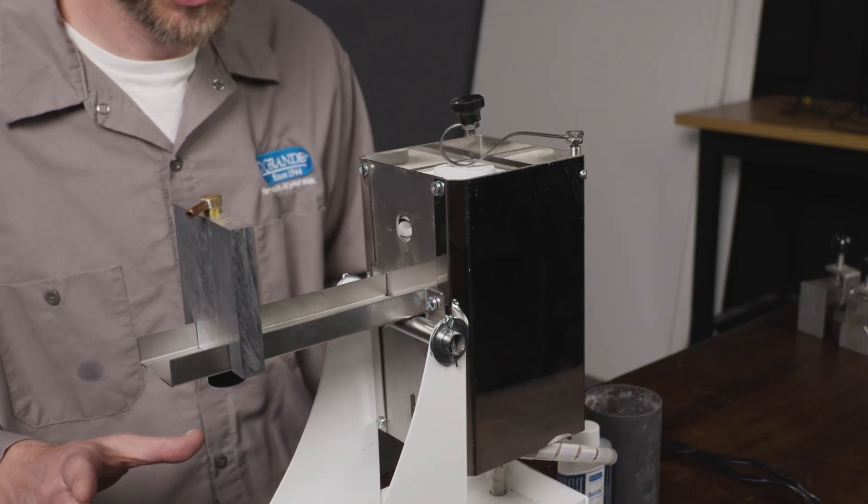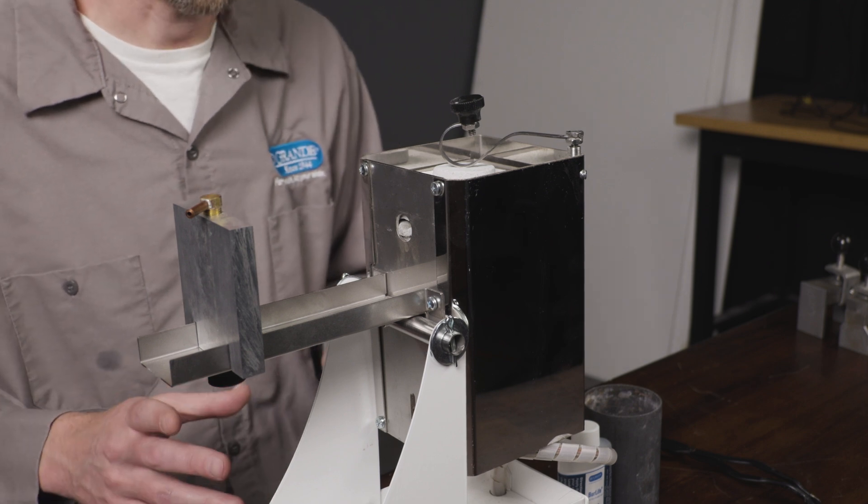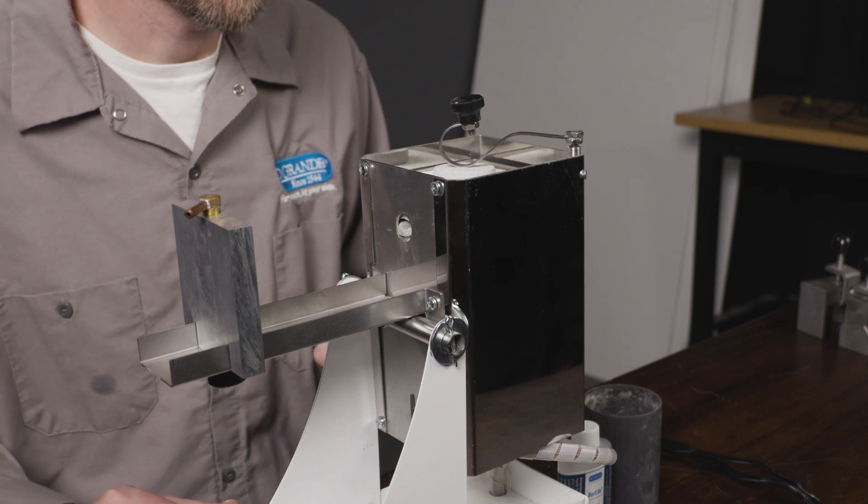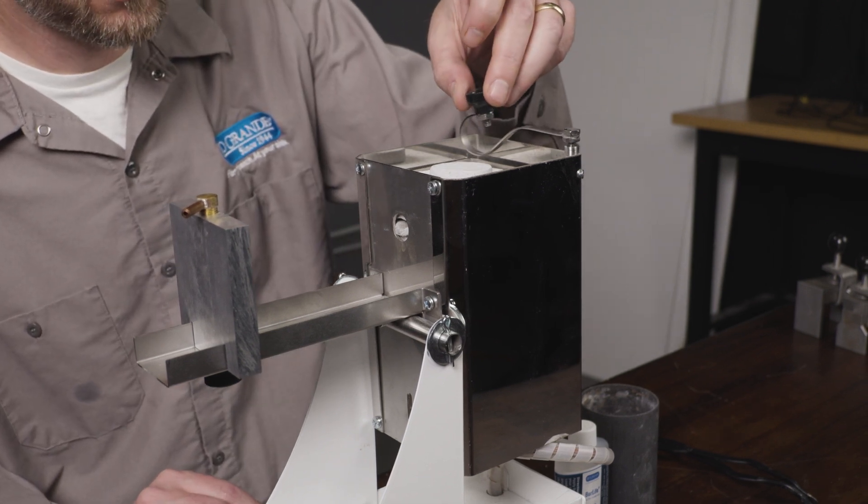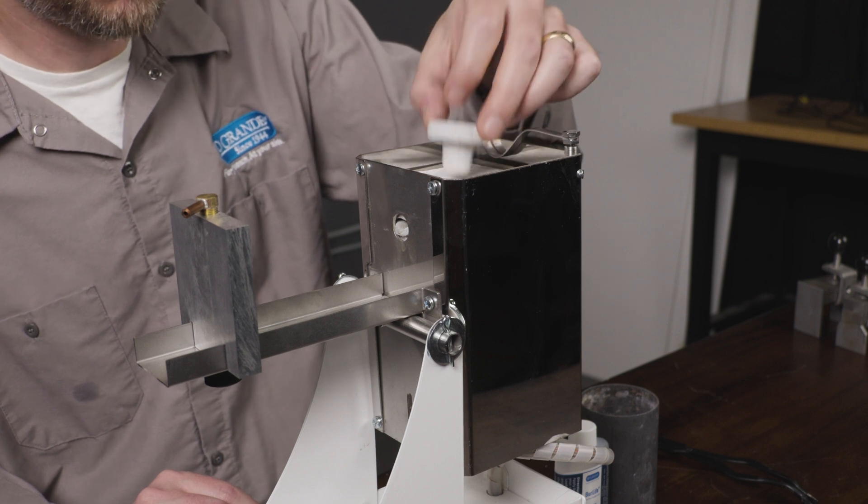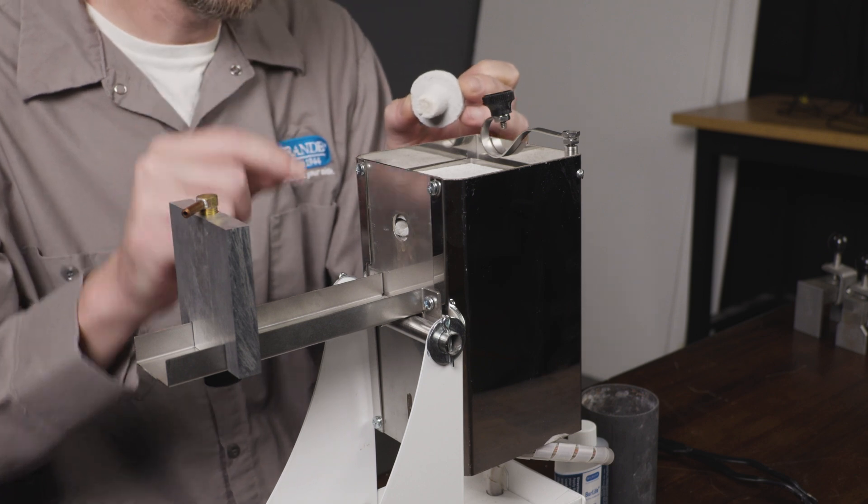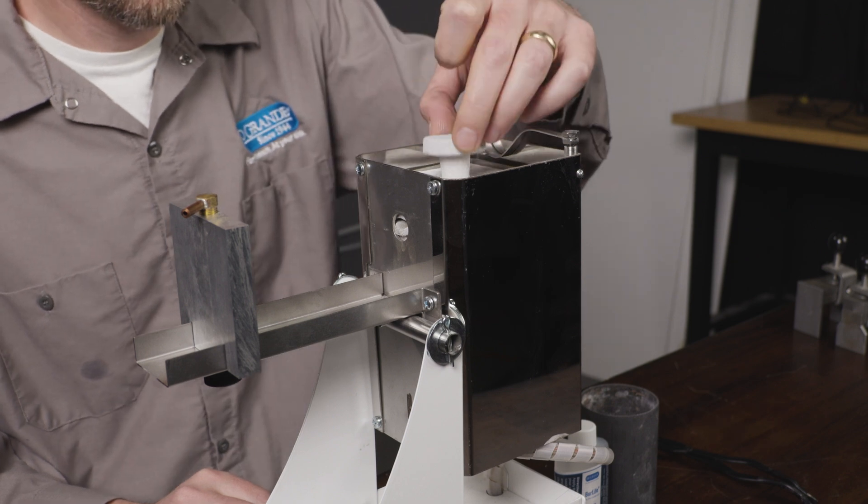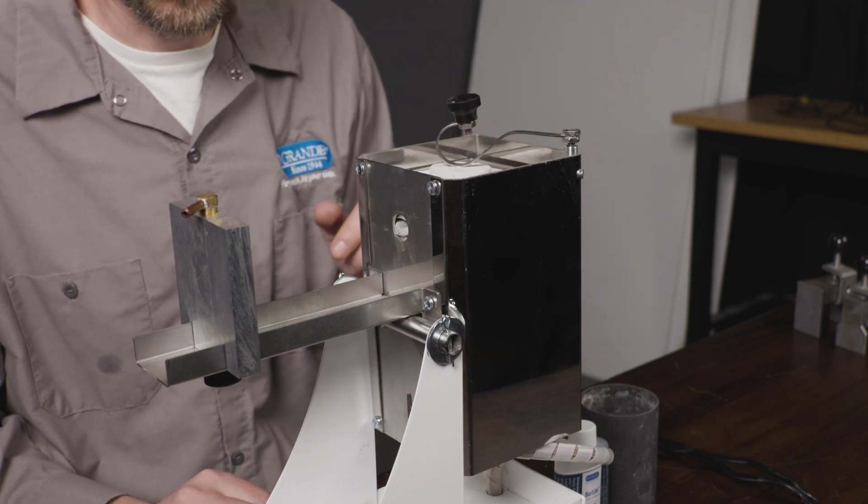Okay, so now that we've got this all put together, let's go through what the casting process is going to look like before we actually do a live demonstration. The first thing I'm going to do is slide over the securing arm and remove the ceramic plug. Now I can add my metal to the hole on the top of the crucible cover, replace the ceramic plug and replace the securing arm.